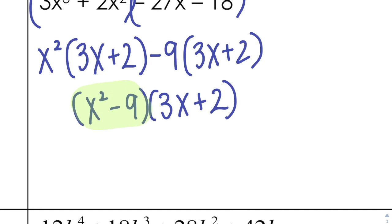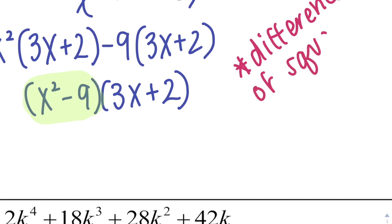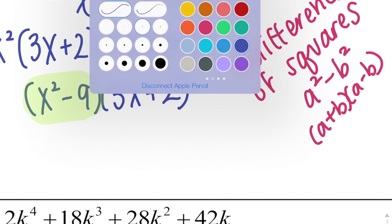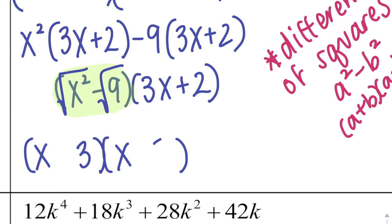So I get (x² minus 9) times (3x plus 2) — but you're not done! Hopefully you're recognizing something: it's a difference of squares. Remember, a² minus b² factors to (a + b)(a − b). So for x² minus 9: square root of x² is x, square root of 9 is 3. Make them conjugates — one positive, one negative — giving (x + 3)(x − 3), and then my last factor is (3x + 2).